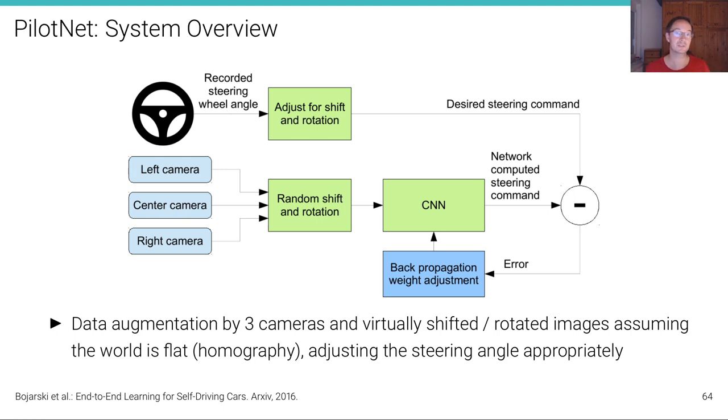So you can also, instead of using Dagger, you can also just try to obtain more camera angles to augment your data set, to get into states where haven't been before. But of course you have to correct your trajectory accordingly. So you need to adjust for the shift and the rotation and then provide this adjusted steering command based on which camera you're using as an input to neural network. That's updated with this loss function, with this error signal.